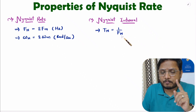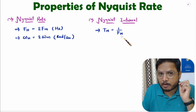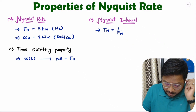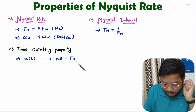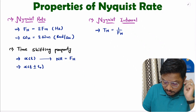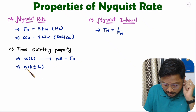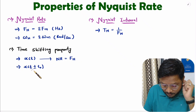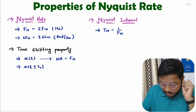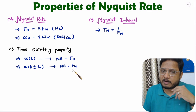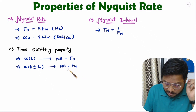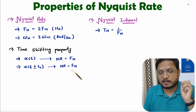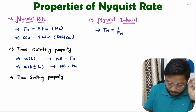The first property is based on the time shifting property. If you have an original signal x(t) with Nyquist rate fn, then after time shifting the Nyquist rate will not change. Time shifting means you shift x(t) by plus or minus t-naught. After shifting, the Nyquist rate remains the same because time shifting does not change the frequency of the original signal.